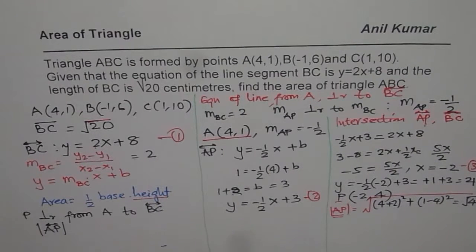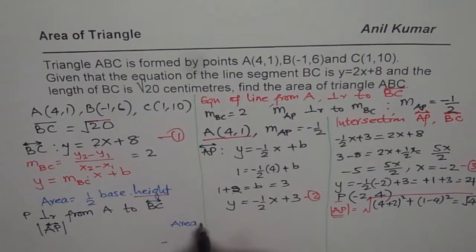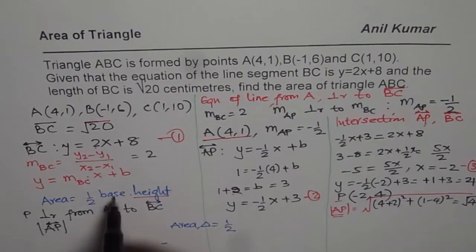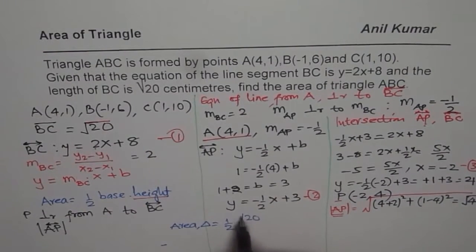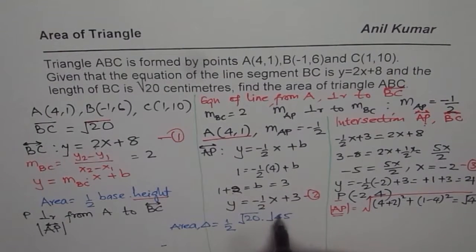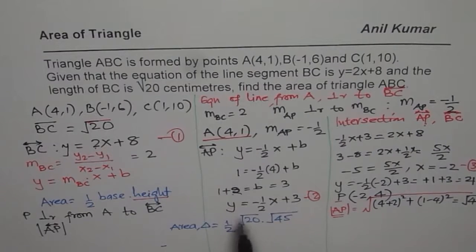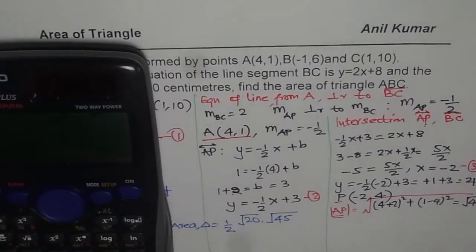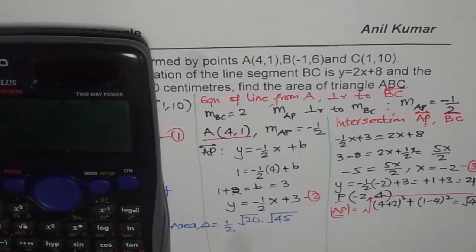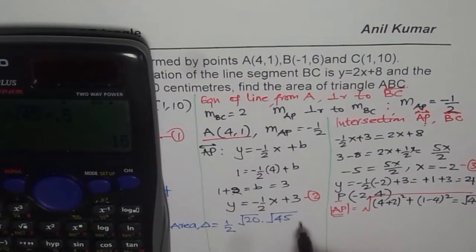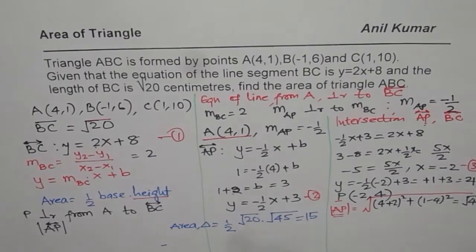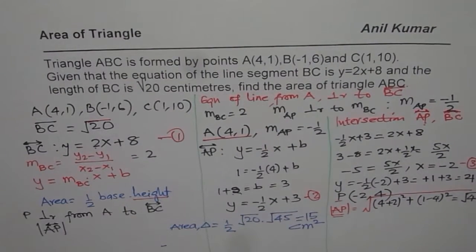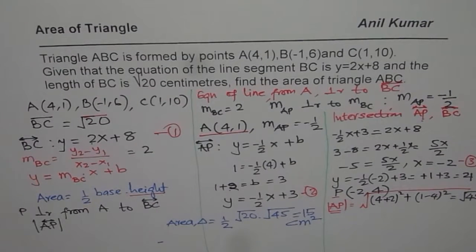Now we can write down the area of the triangle. Area = ½ × base × height = ½ × √20 × √45. Using a calculator: √20 × √45 × 0.5 = 15. So the area of triangle ABC is 15 cm².